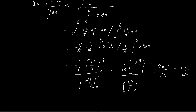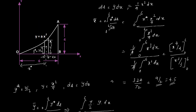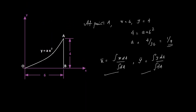So the Y coordinate of the centroid is 1.2 and the X coordinate is 4.5. The centroid is located at (4.5, 1.2), with X̄ = 4.5 and Ȳ = 1.2, shown here on the diagram. If you have any confusion in calculating or deriving these equations, go through the video where we discuss centroid and centre of gravity. Thank you.